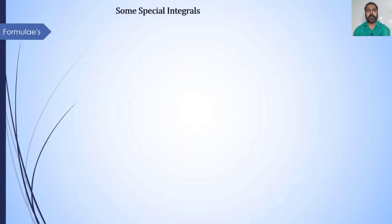To solve these examples, we need some formulas on special integrals. The first formula is: integration of 1 upon x² plus a² dx is equal to 1 upon a times tan inverse of x divided by a, plus c.